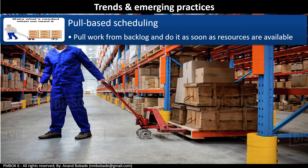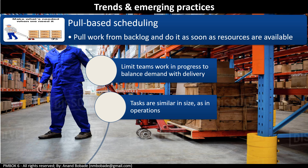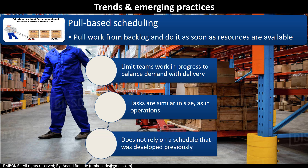Pull-based scheduling is used in lean manufacturing. Resources pull work from a backlog and work on it as soon as they are available or their previously assigned task is completed. Key points: pull-based scheduling doesn't rely on a previously developed schedule, tasks are similar in size as in operations, and it limits the team's work in progress to balance demand with delivery capacity.